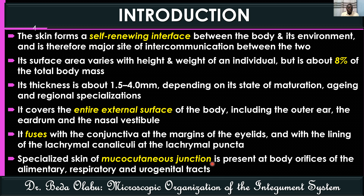The skin blends with mucous membranes at regions called mucocutaneous junctions. These are present at orifices of the alimentary canal such as the mouth and anal canal, orifices of the respiratory system like the nose, and orifices of the urogenital tract such as the urethra.